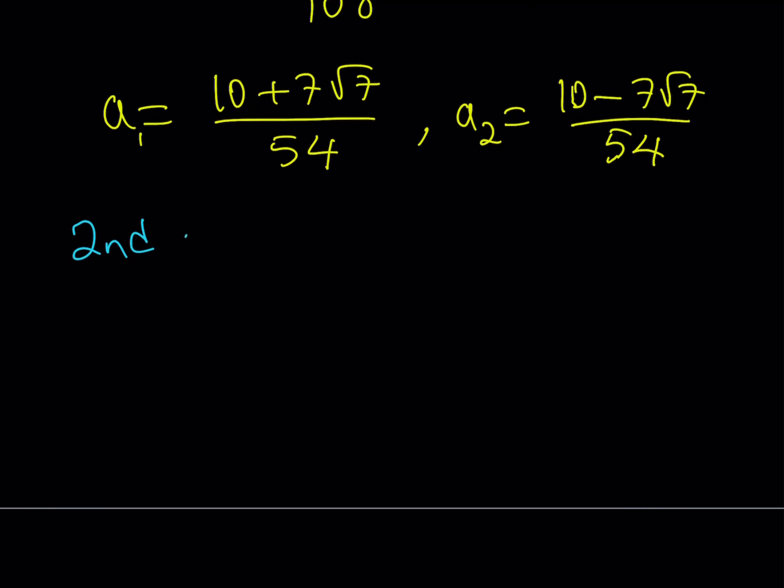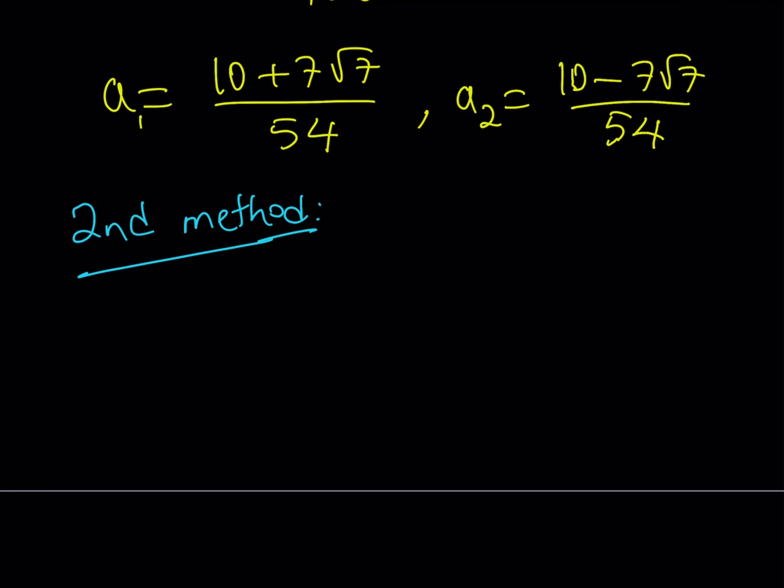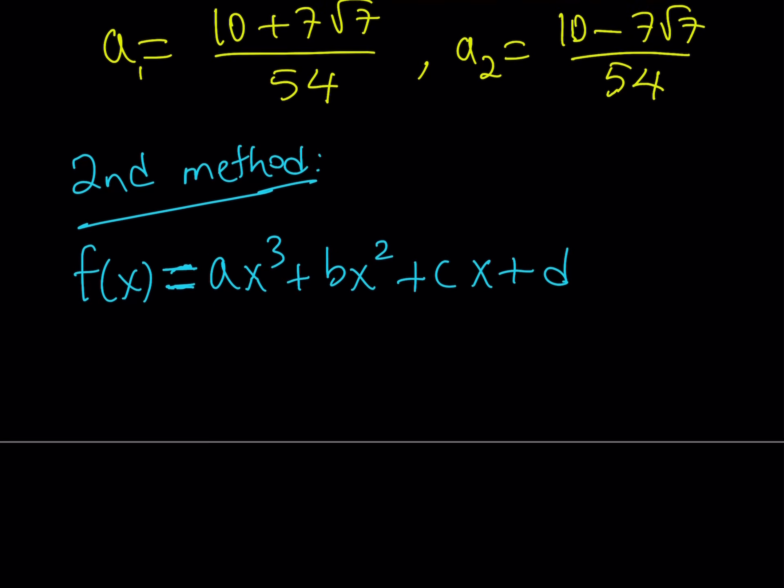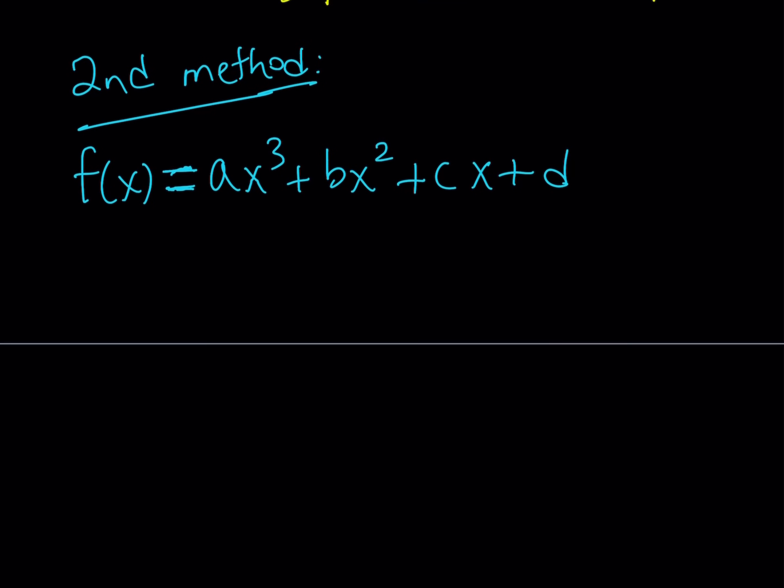Let's take a look at the second method. So we got the a values from the first method and we should be getting the exact same values. Let's see how the second method works. The second method is kind of nice because I'm going to talk about the discriminant of a cubic equation. Have you heard about that before? Well, that's kind of like an interesting topic. We don't really do much about it.